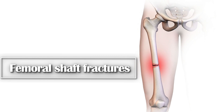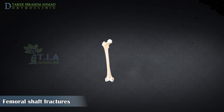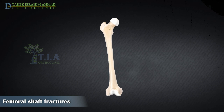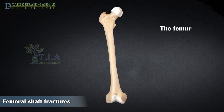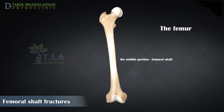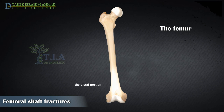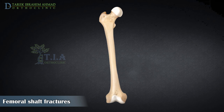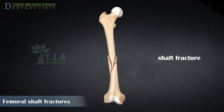Femoral Shaft Fractures. The femur is the longest and strongest tubular bone in the human body and one of the principal load-bearing bones in the lower extremity. The femoral shaft can be divided into three parts: the proximal portion, including the femoral head, neck, and intertrochanteric area; the middle portion involving the femoral shaft; and the distal portion, including the supracondylar area. In this video, I discuss the mid-shaft fractures of the femur.